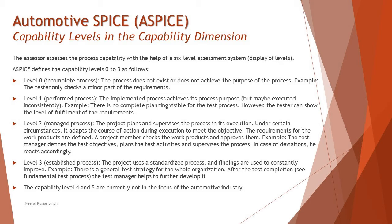Level 3 is the established process. The project uses a standardized process and findings are used to constantly improve. You have a standard process, and every time you perform it you conduct a retrospective at the end to gather lessons learned, improvise the process further, and put in enhancements to prevent mistakes from recurring. That's what we call Level 3 — the established process.